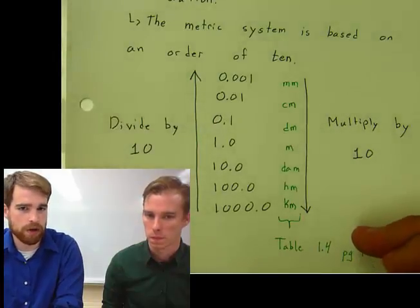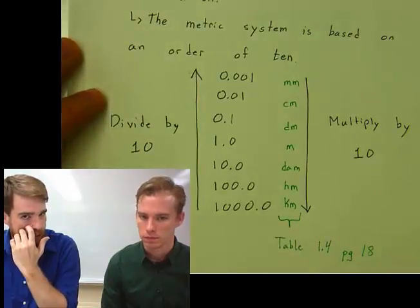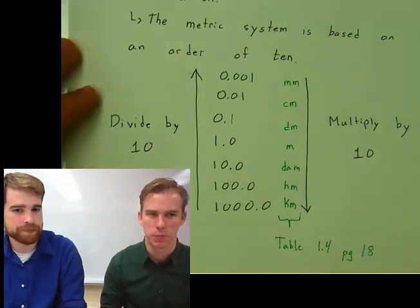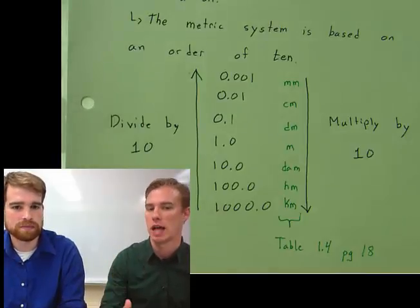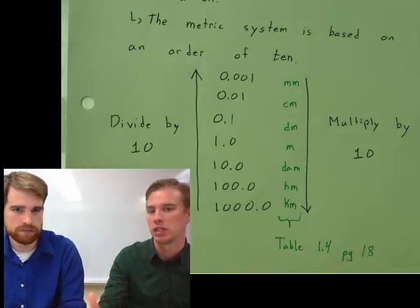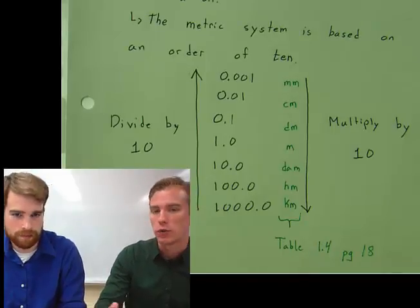We actually went in our textbook on page 18 to table 1.4, and you'll actually see these little letters—that top at the very top, the 0.001 is mm and that's a millimeter. Now if you go into this table it's going to look a little differently.